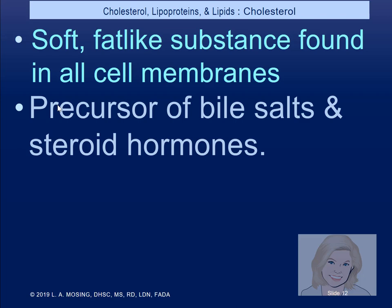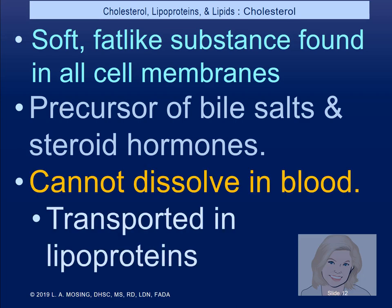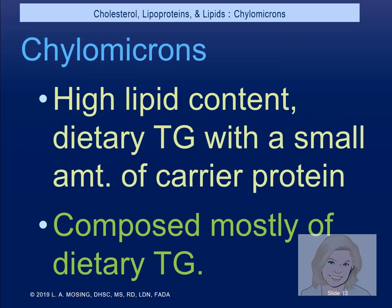Regarding cholesterol: do humans make cholesterol? Yes, we make all that we need. It's a soft fat-like substance found in all our cell membranes. It's a precursor of our bile salts and steroid hormones. It cannot dissolve in the blood, so we transfer it as lipoproteins. Chylomicrons have a high lipid content — they're dietary cholesterol with a small amount of carrier protein, mostly composed of triglyceride.